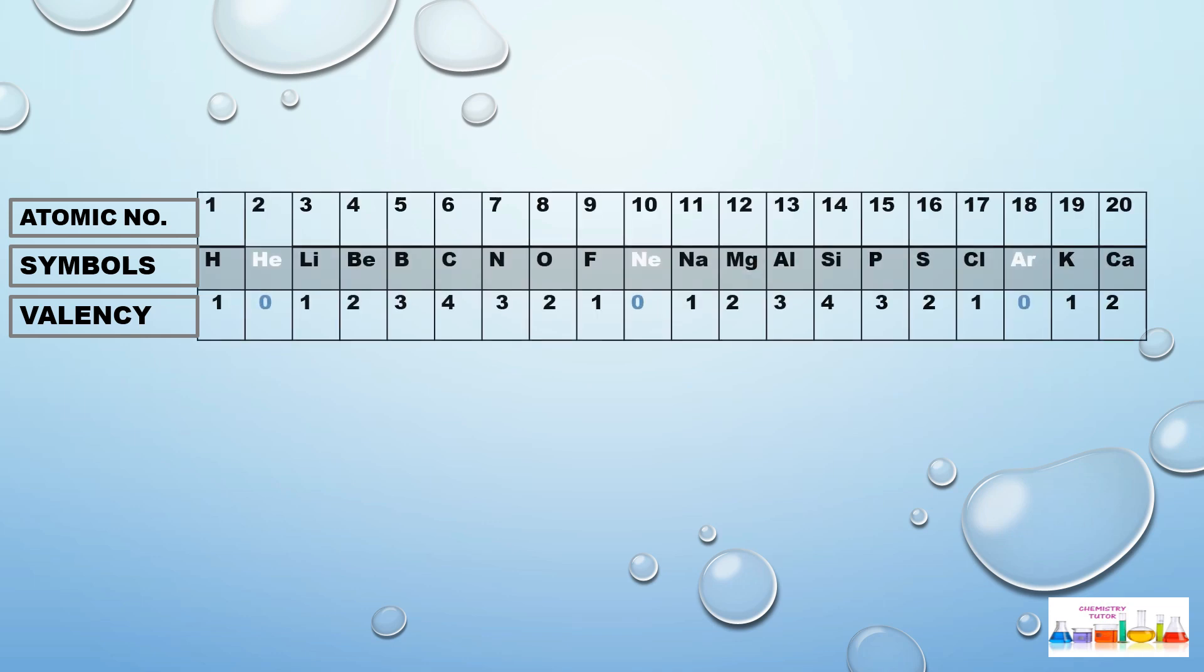In this way, every element got a number which is actually the valency of that particular element. Let's suppose, take the example of lithium - in front of lithium, 1 is written.